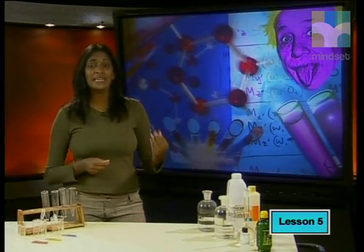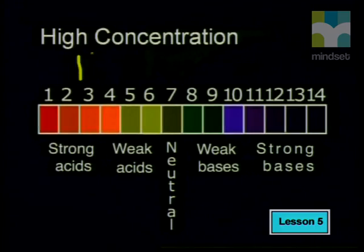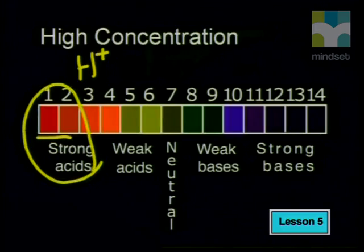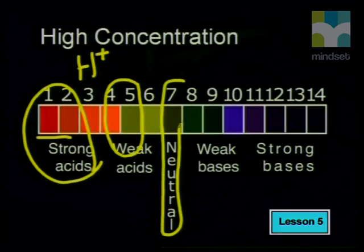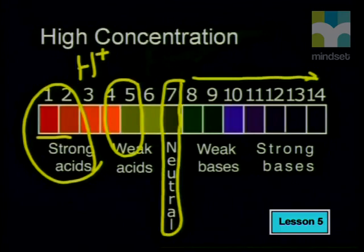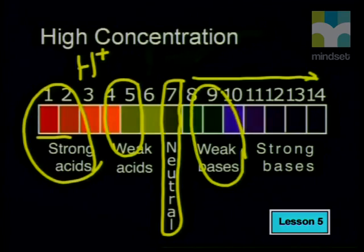There is a mathematical relationship between pH value and hydrogen ion concentration. When the concentration of hydrogen ions is high, the substance is acidic and the pH value will be low. Strong concentrated acids have pH values of 0 or 1; weak acids can have pH values of 4 or 5. Neutral substances like water have a pH of 7. When hydrogen ion concentration decreases the substance is a base, with pH above 7. Weak bases have pH of 8 or 9, while strong concentrated alkalis have pH values of 13 or 14.